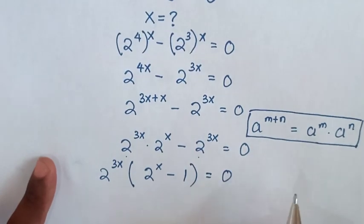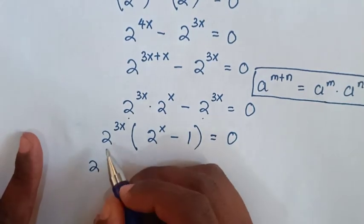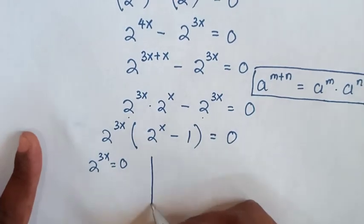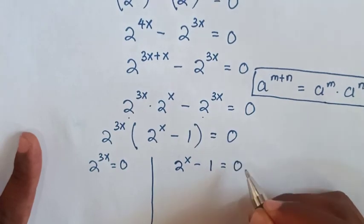Then in here we have two cases where first case 2^3x is equal to 0 and another case this one 2^x - 1 is equal to 0.